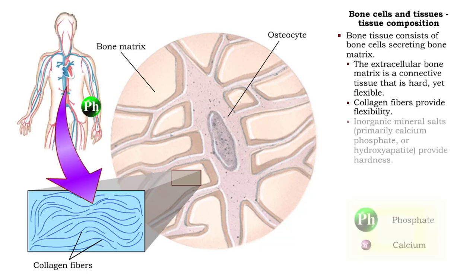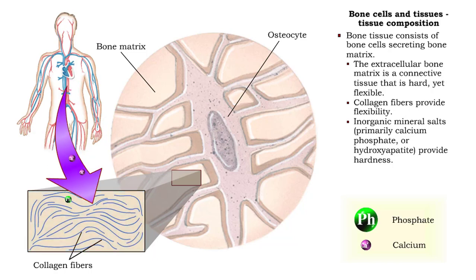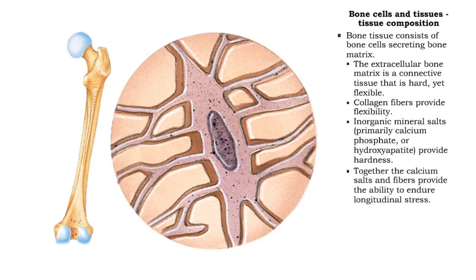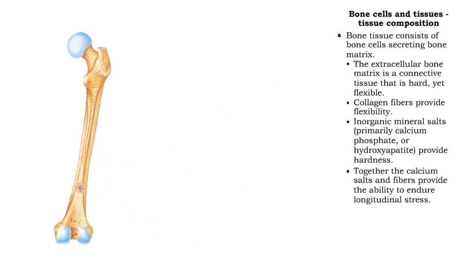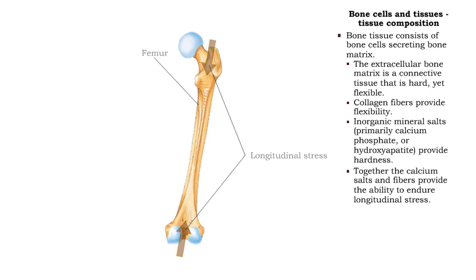The tissue's hardness depends on the presence of crystallized inorganic mineral salts, primarily calcium phosphate, also known as hydroxyapatite. This combination gives bone great tensile strength, which is the ability to endure longitudinal stress along a long axis.